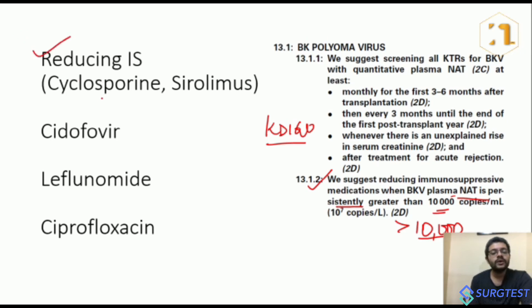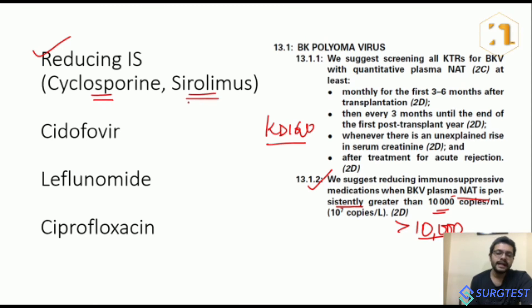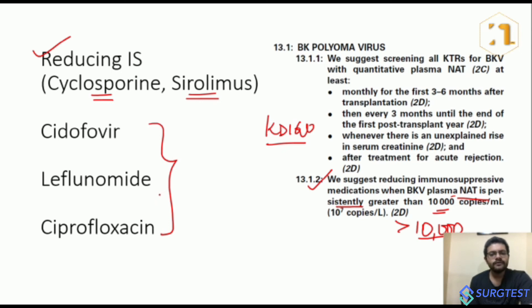The two drugs to reduce or discontinue are tacrolimus and MMF. Tacrolimus can be converted to cyclosporine, and MMF can be replaced with an mTOR inhibitor such as sirolimus, since tacrolimus and MMF appear to activate BK virus replication. Three other drugs studied in small trials are cidofovir, leflunomide, and ciprofloxacin. Leflunomide is increasingly used in practice for BK virus nephropathy, but there are no guideline recommendations for these agents — the only guideline recommendation is to reduce immunosuppressive therapy.